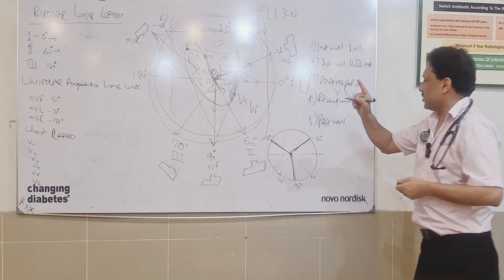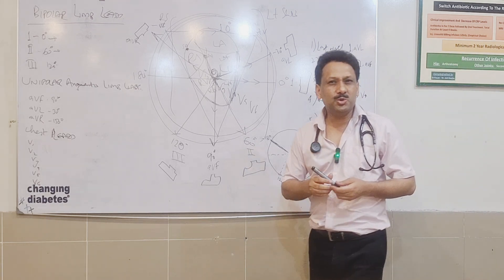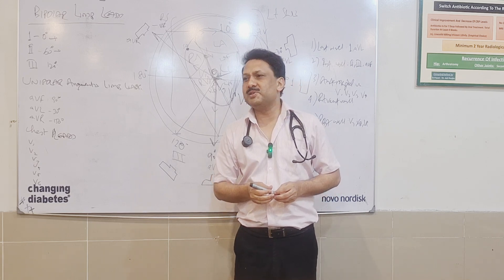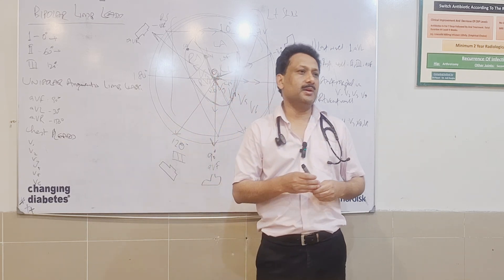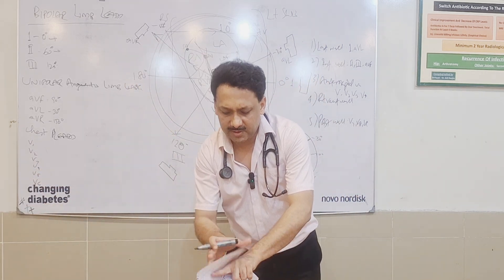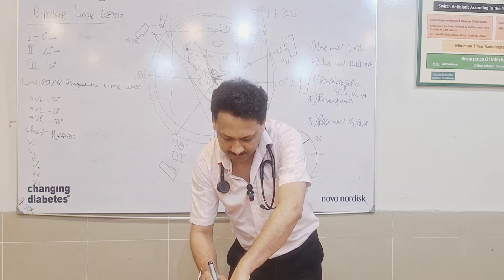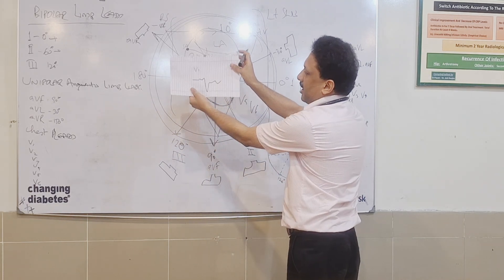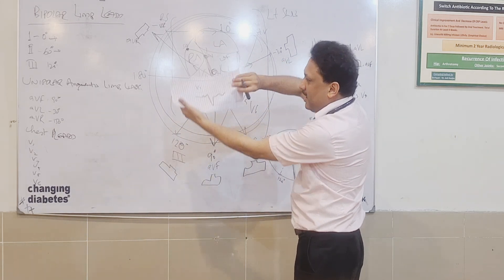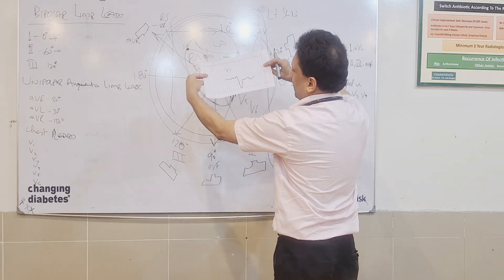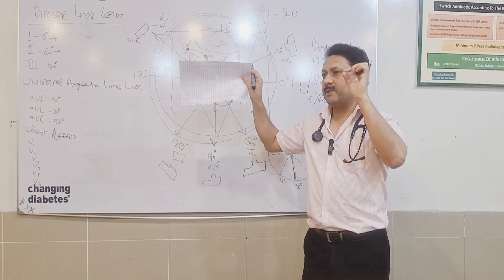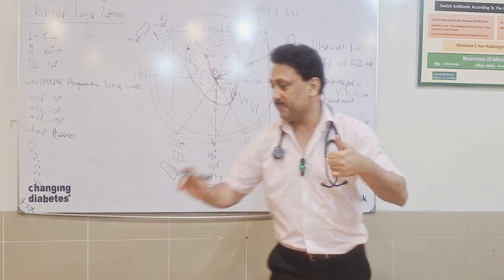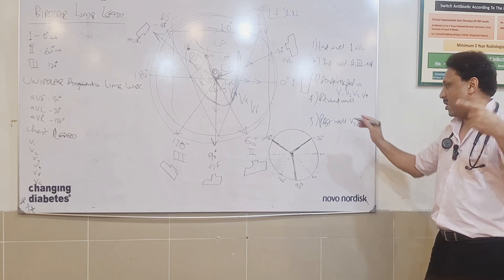V7, V8, and V9 are the three cameras placed on that side to see the posterior wall. But usually we do not proceed that way — we simply see the mirror image of V1 and V2. Using an empty paper to demonstrate: if you are seeing lead V1 in a patient and you tilt that ECG paper, you are now seeing the posterior wall image. So when asked about the posterior wall, the answer is either place V7, V8, V9 or look at the mirror image of V1, V2.